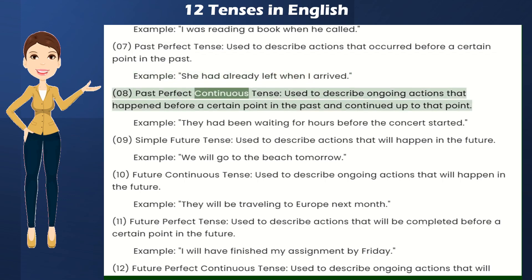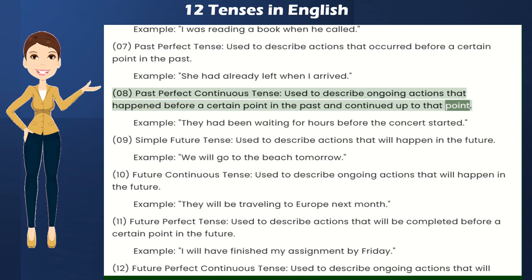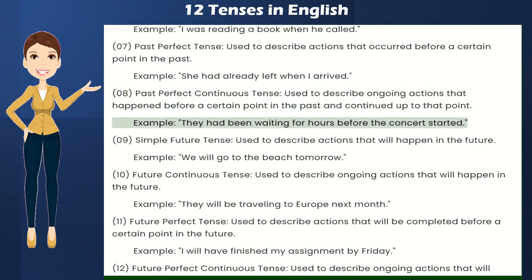Past Perfect Continuous Tense — used to describe ongoing actions that happened before a certain point in the past and continued up to that point. Example: They had been waiting for hours before the concert started.